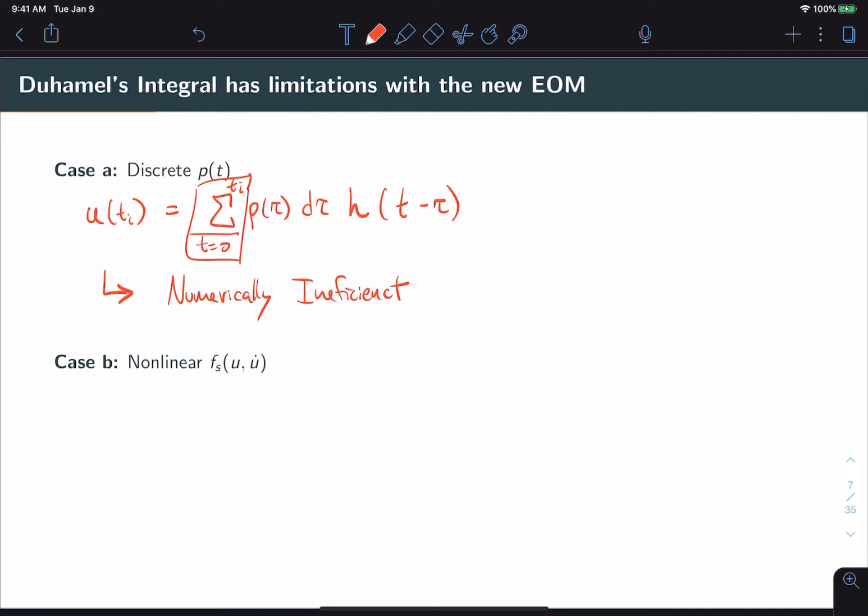In the second case where we have a nonlinear equation somewhere in the EOM, Duhamel's integral is completely useless at this point. Remember that Duhamel's integral assumes superposition of impulse responses. This requires linearity. So at this point, we're completely out of luck and this is really where the main advantage of numerical methods comes in. They're efficient and feasible ways to compute responses of nonlinear systems.